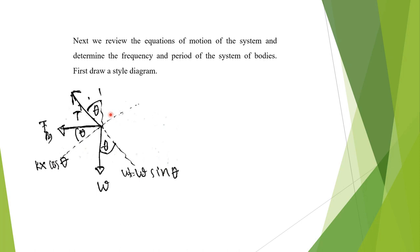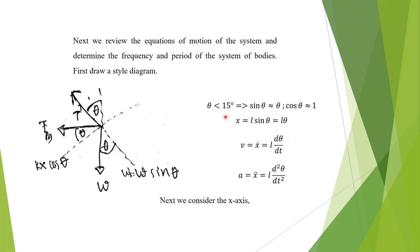After we draw the free body diagram, next we note that where theta is under 15 degrees, sin theta approximately equals theta and cos theta approximately equals 1. The analysis of the vector: x equals l sin theta, approximately equals l theta. Velocity x-dot equals l times d-theta/dt.